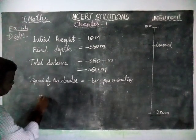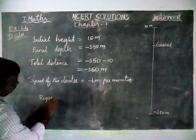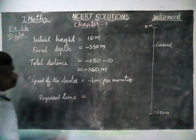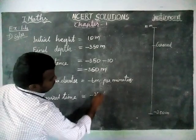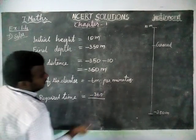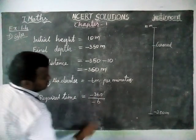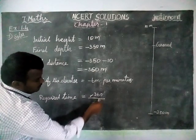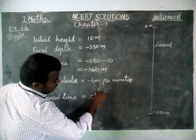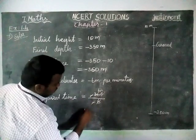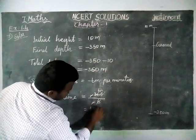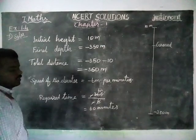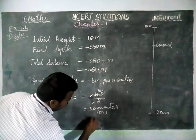Now we are going to find the required time. Required time is equal to total distance divided by speed: minus 360 divided by minus 6 meters per minute. The minus signs cancel, giving 360 divided by 6, which equals 60 minutes.